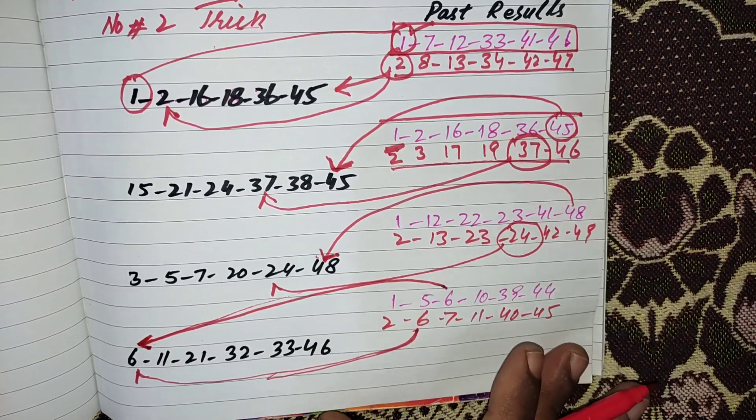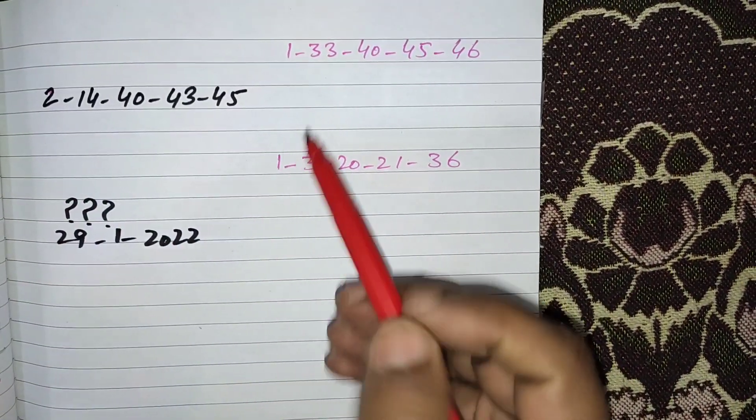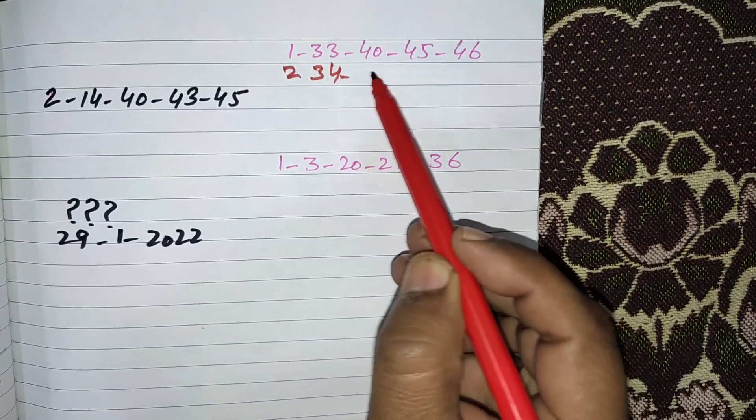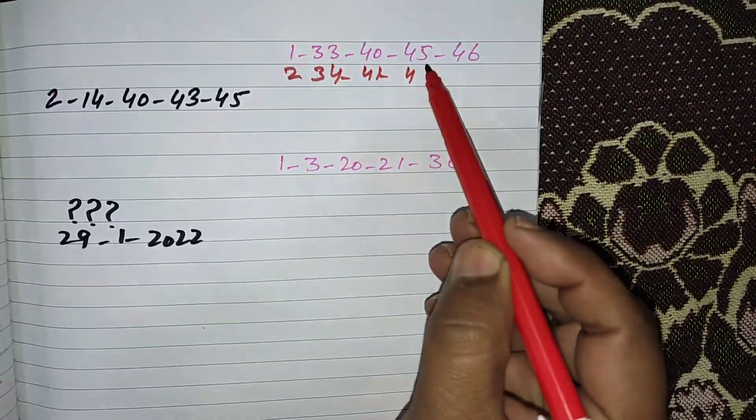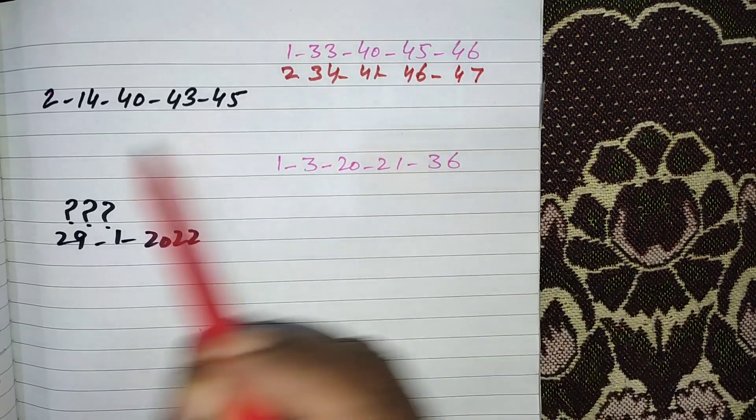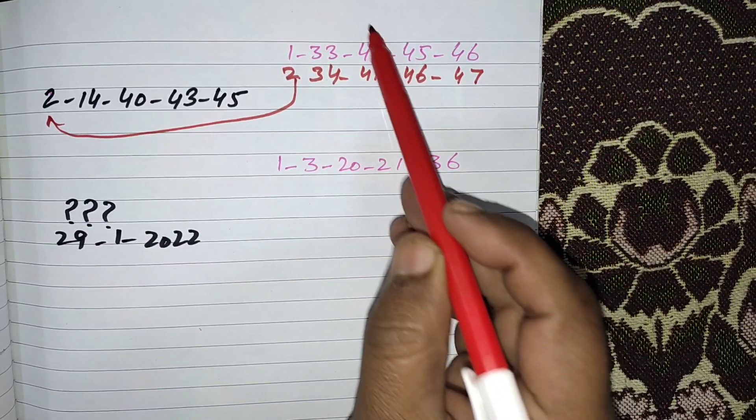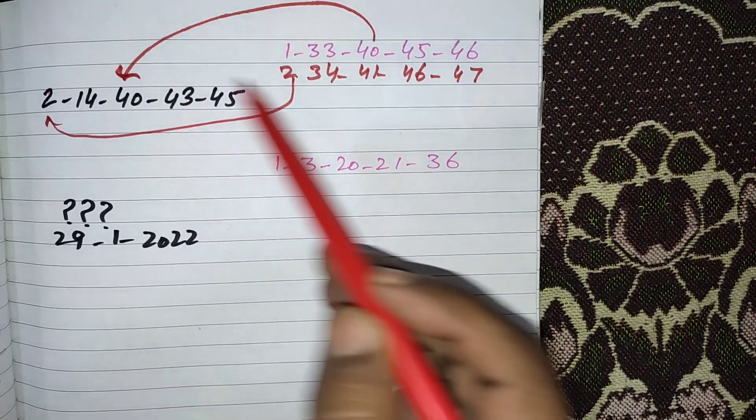Now move to the next page: 2, 34, 41, 46, and 47. You can see 2 number came from here and 40 number was repeat from here.